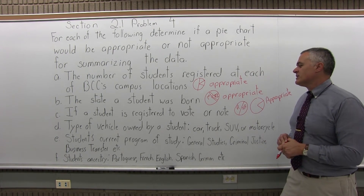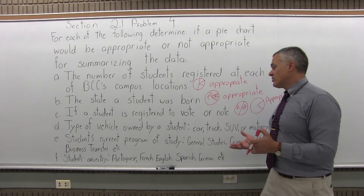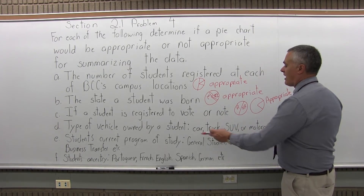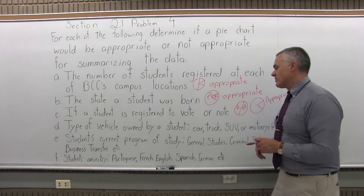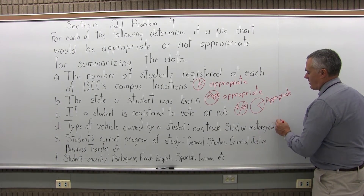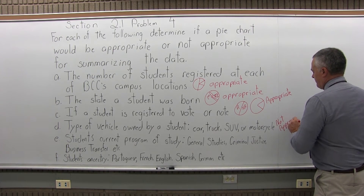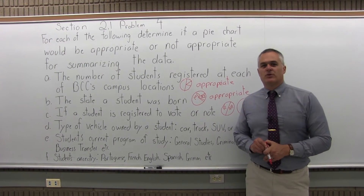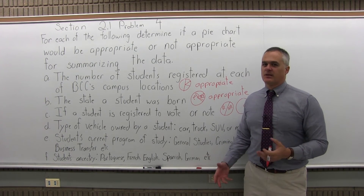Part D: the type of vehicle owned by a student — car, truck, SUV, or motorcycle. On the surface it seems pretty reasonable and you could make a pie chart. But for certain students who might have a car and a motorcycle, you're kind of double-dipping into certain categories and it might not work out accurately. That's what can get you into trouble with a pie chart — when percents won't add up to 100%, because certain categories get double counted.